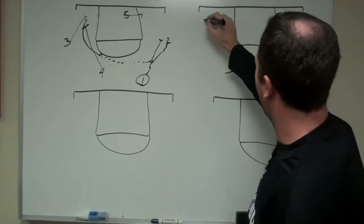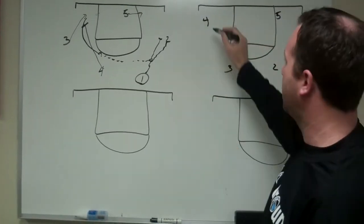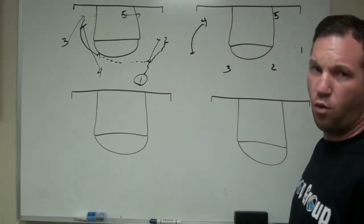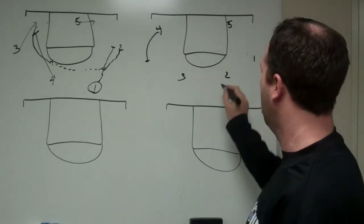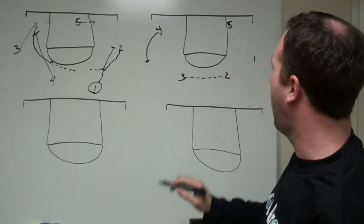So then your alignment, the 4-man will set that screen. After the 4 sets it, he will lift out. So you're in that 4-out, 1-in, give the 5-man, always have space to post up. 2-3 will be the pass.